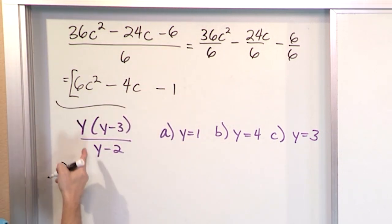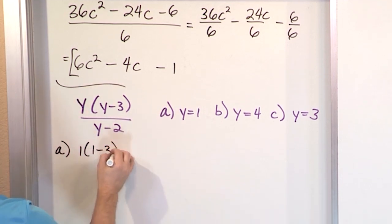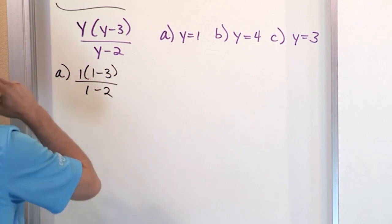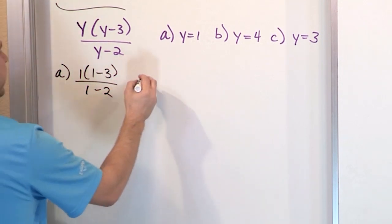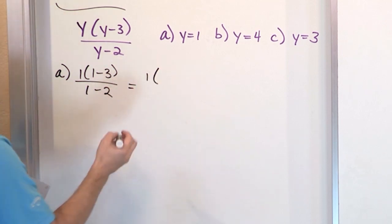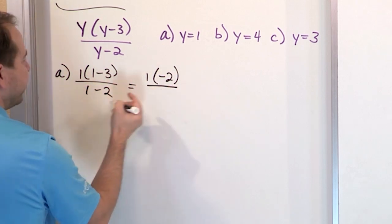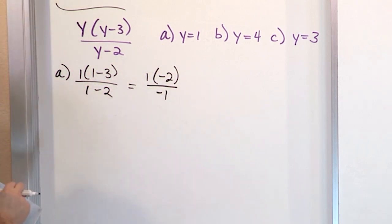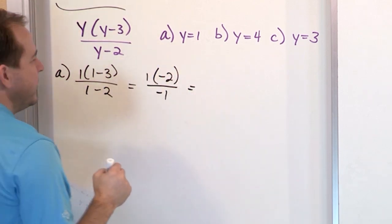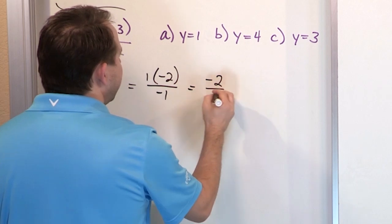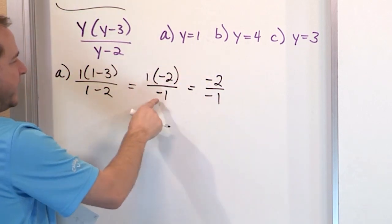For Part A, y equals 1, so we have 1 times (1 minus 3) over (1 minus 2). Working inside the parentheses first: on the top, 1 minus 3 is negative 2. On the bottom, there's an invisible parentheses, so 1 minus 2 is negative 1. In the numerator, 1 times negative 2 gives negative 2. Dividing negative 2 by negative 1, same sign gives you a positive 2. Final answer: positive 2.